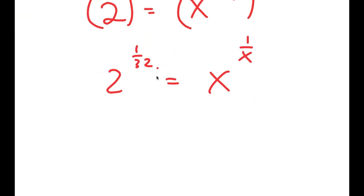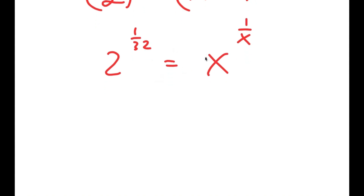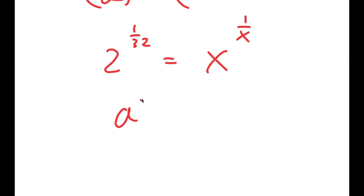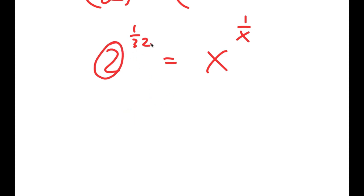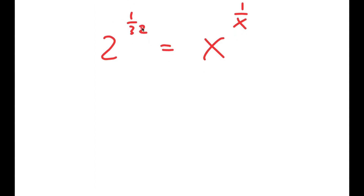Now we want to simplify this because our end goal is to make this in the form a to the power of 1 over a is equal to b to the power of 1 over b — in that case, a is equal to b. We already have x to the power of 1 over x, so we just need to make the left hand side be in the form a to the power of 1 over a. What we can do is rewrite 1 over 32 as 2 over 64.